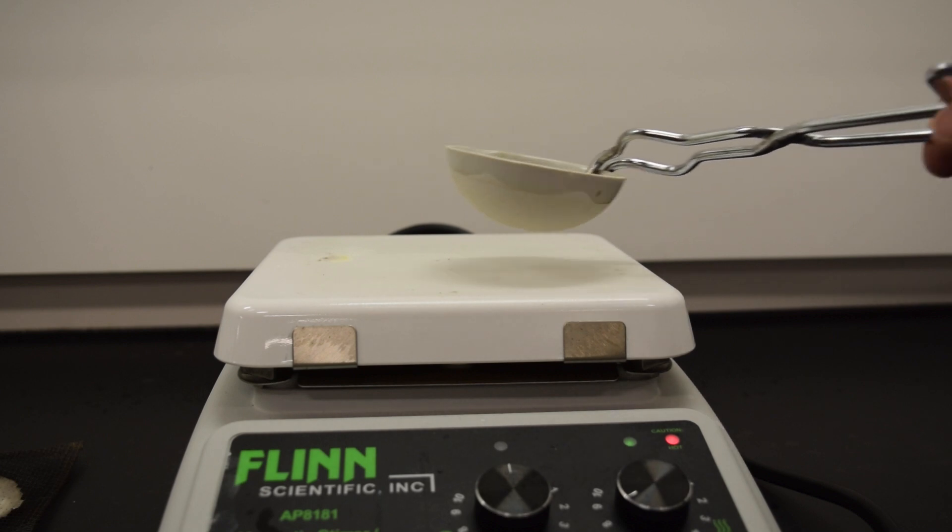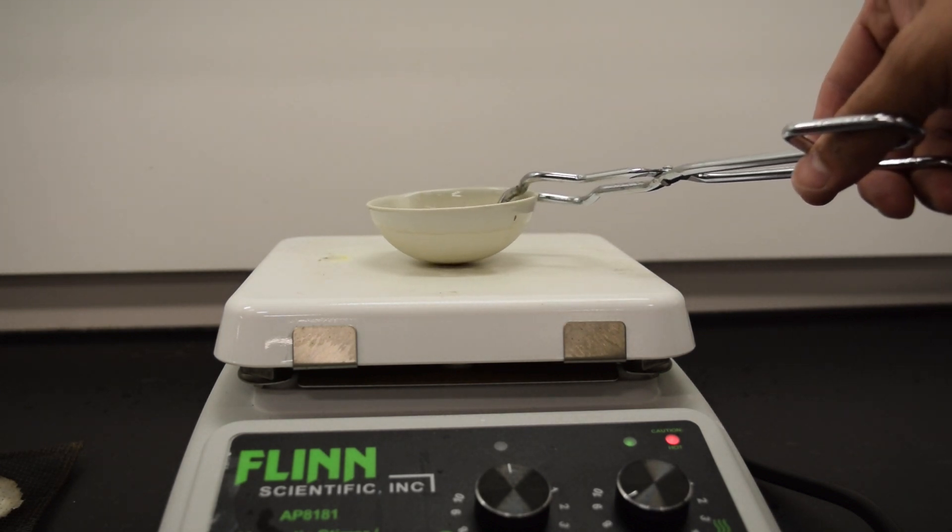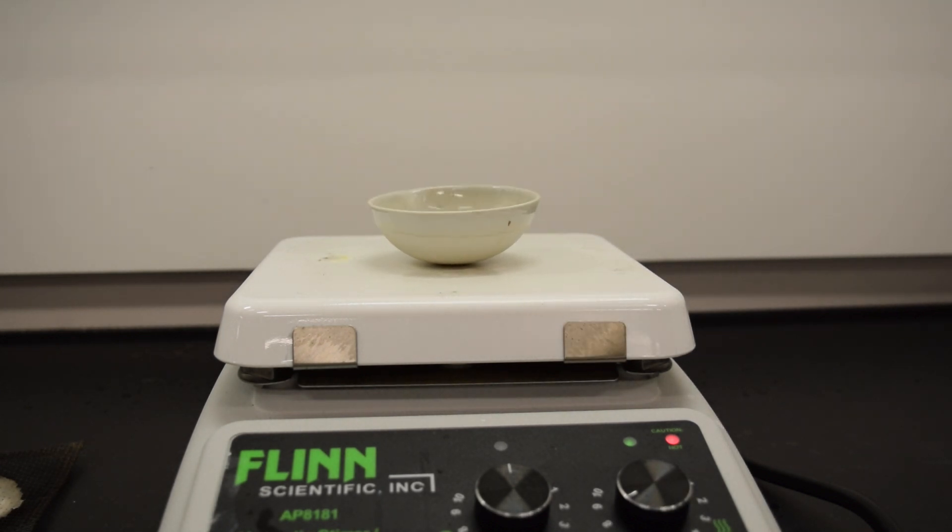Heat the evaporating dish slowly at first, then at high heat. This will remove any water adsorbed on the dish. Using tongs, remove the dish, set it on a wire gauze, and let it cool to room temperature.